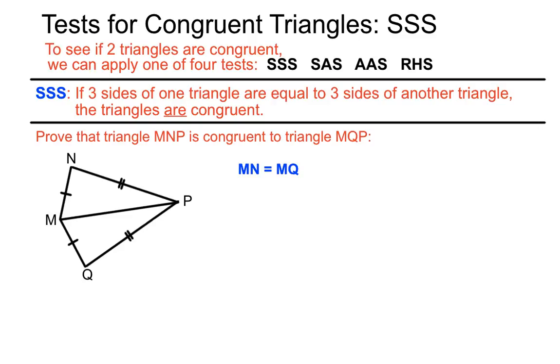Now MN has one marking on it, and MQ has one marking on it, so we can say that they're equal. And that's given to us in the diagram. And that's a side statement. And we're looking for two other side statements to add up to our congruency proof here.